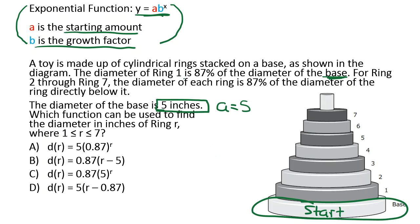Now, it says that the diameter of ring 1, 87% of the base. For rings 2 through 7, the diameter of the ring is 87% of. 87% of, the word of means times. That's our growth factor. That's going to be our B value. Our A is 5. Our B is going to be 87%.